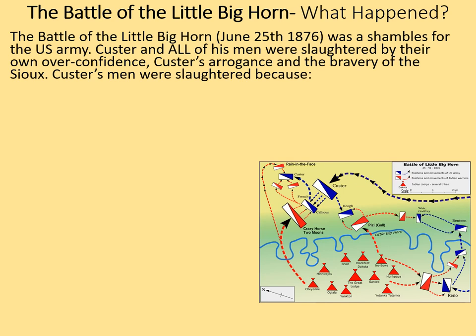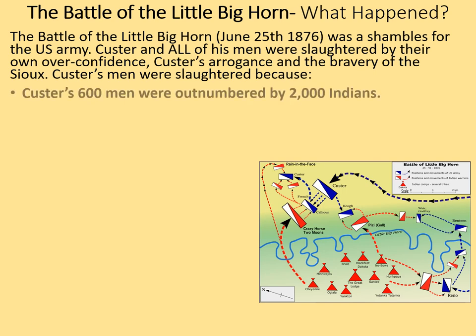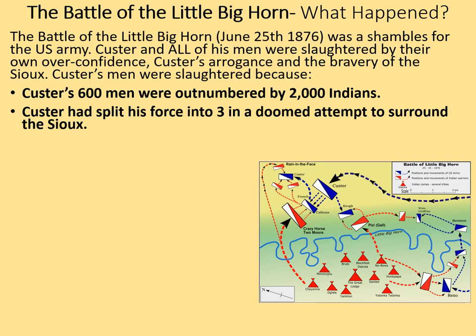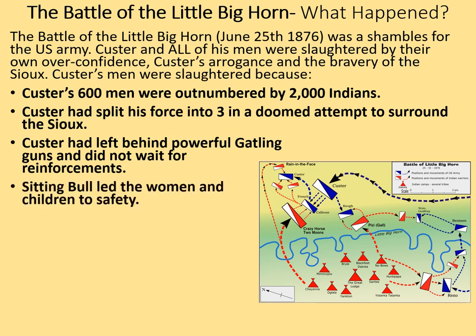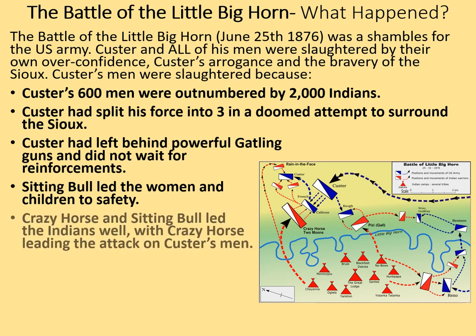The Battle of the Little Bighorn on June 25th, 1876 was a shambles for the US Army. Custer and all of his men under his command were slaughtered by their own overconfidence, Custer's arrogance, and the bravery of the Sioux. Custer's 600 men were outnumbered by 2,000 Indians. Custer had split his force into three in a doomed attempt to surround the Sioux — it's those under Custer's direct command who were wiped out, shown in the top left of the map. He had also left behind powerful Gatling guns — early machine guns where you crank a handle to spin the barrels — and did not wait for reinforcements. Sitting Bull led the women and children to safety, while Crazy Horse led the attack on Custer's men.